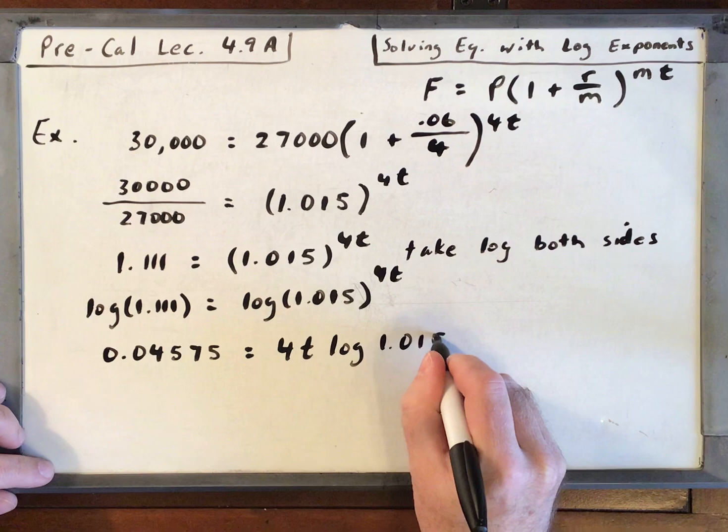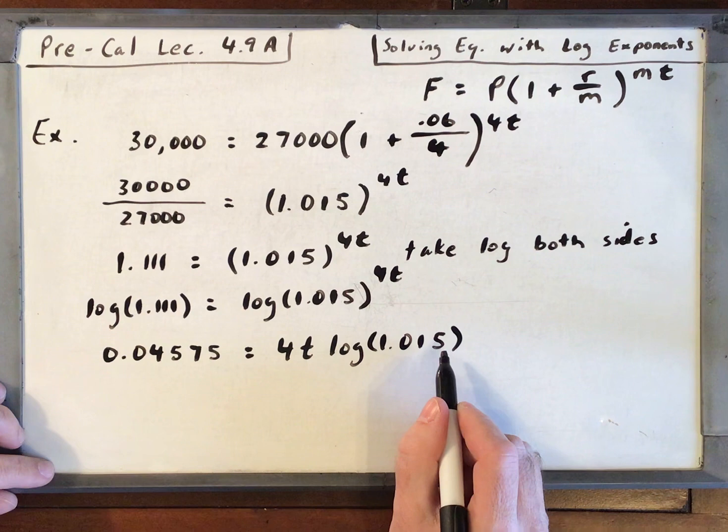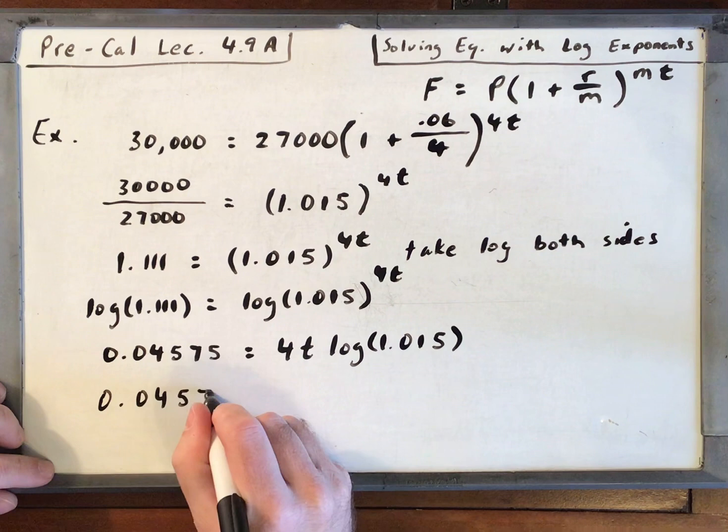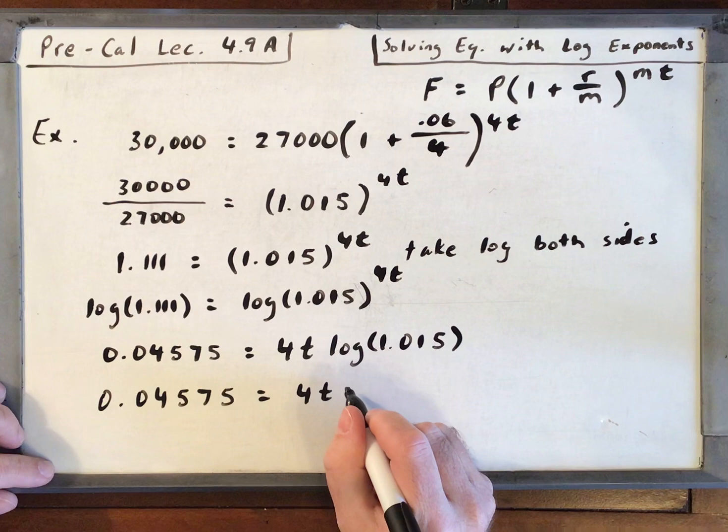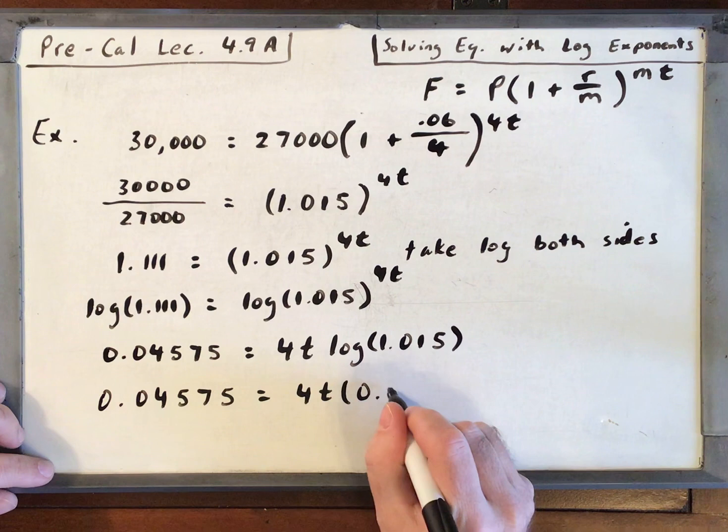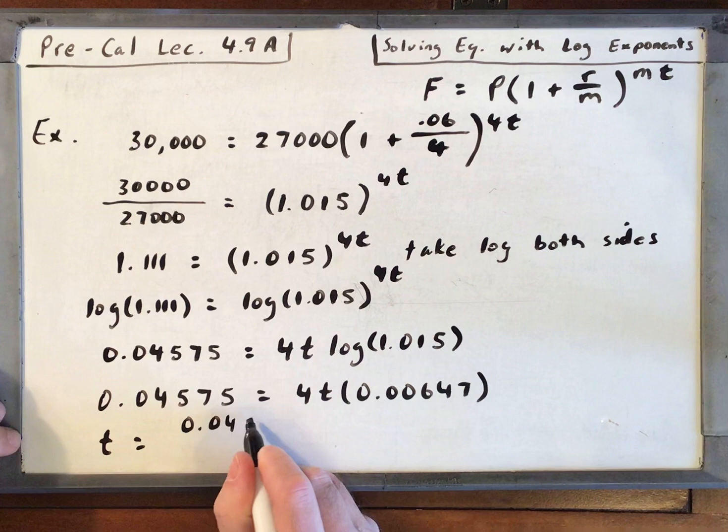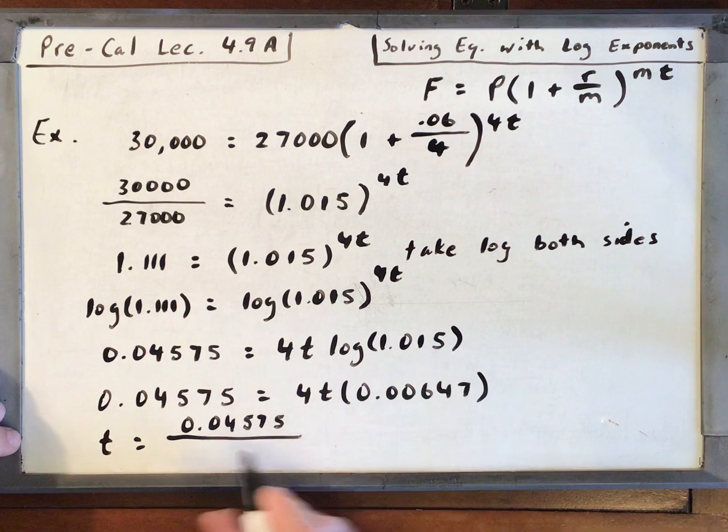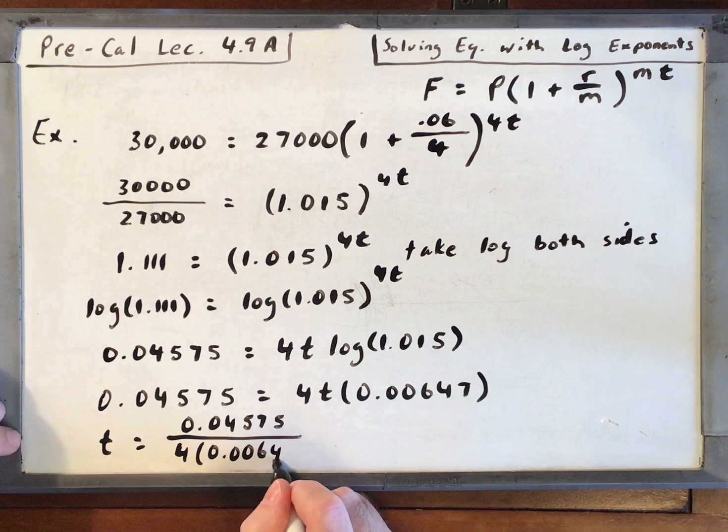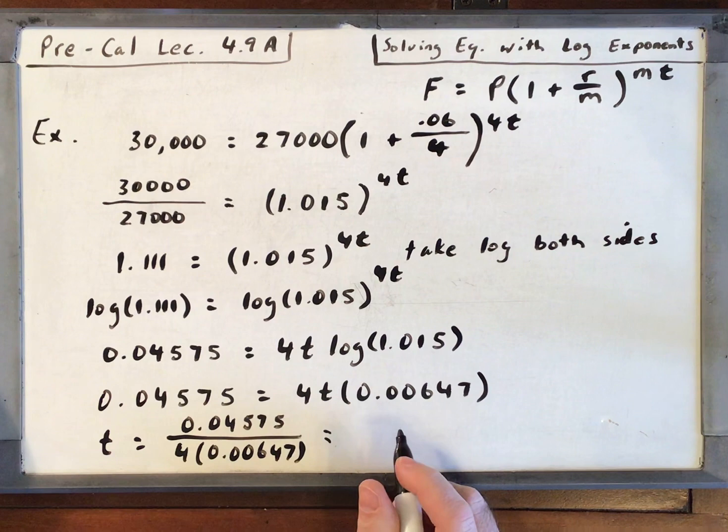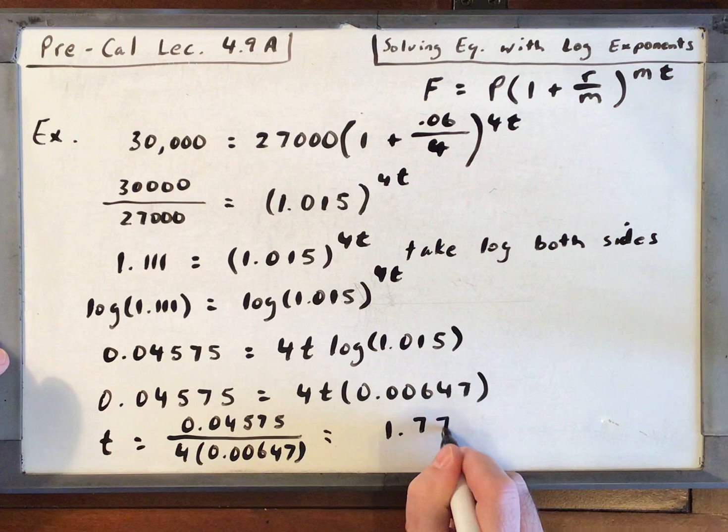Log of 1.015, that's just a number. So I've got 0.04575 is equal to 4T times log of 1.015. If you put that in your calculator, it's going to be 0.00647. So all I need to do to get T is divide 0.04575 by 4 times 0.00647. We're going to bring those two underneath and then just put it in our calculator.